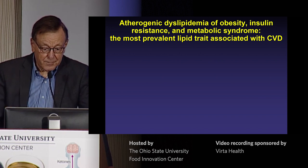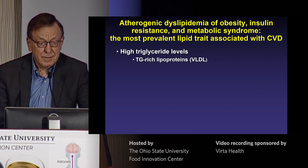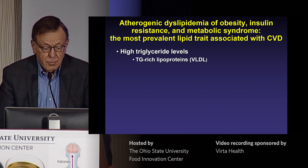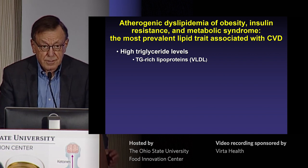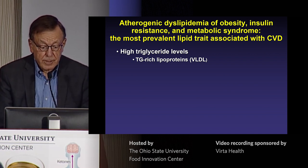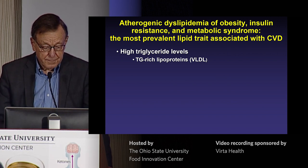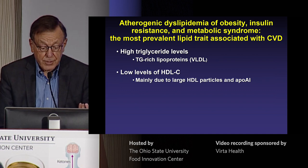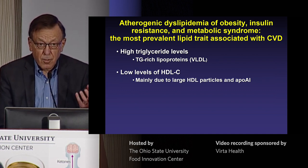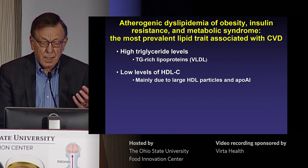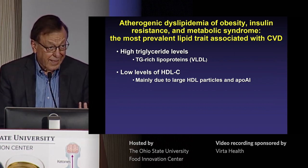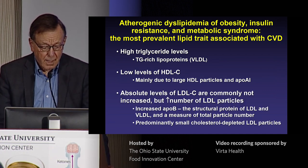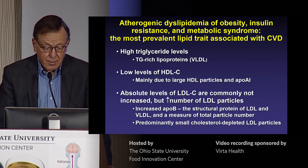What is atherogenic dyslipidemia? It consists of a triad including high triglyceride levels — which translates to increased levels of triglyceride-rich lipoproteins or VLDL — low levels of HDL cholesterol, which is mainly due to reduction in large HDL particles. I'm really moving from the standard lipid measurements to something that more accurately reflects their biological underpinnings, which are the particles in which they're transported.